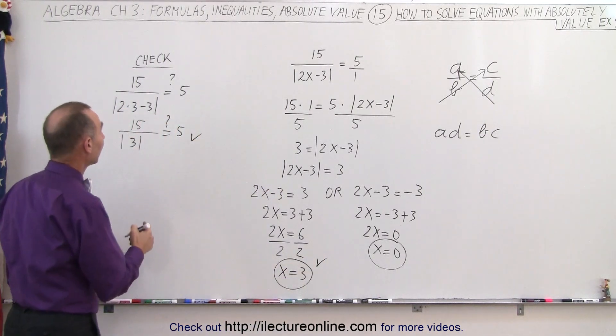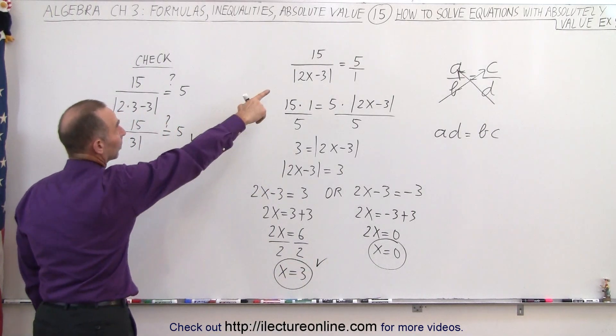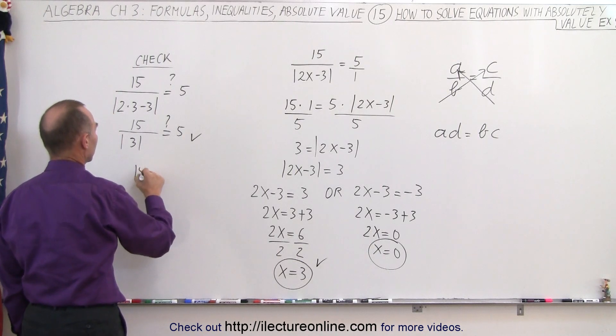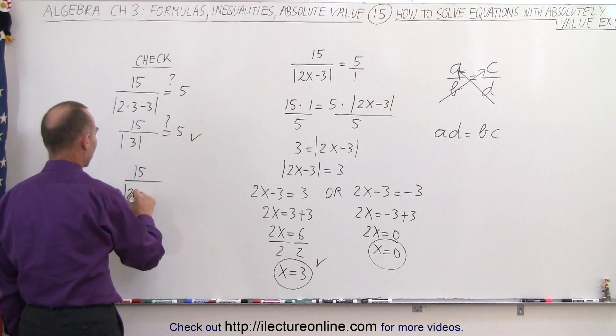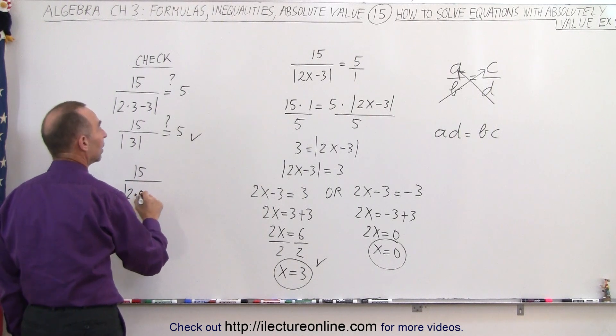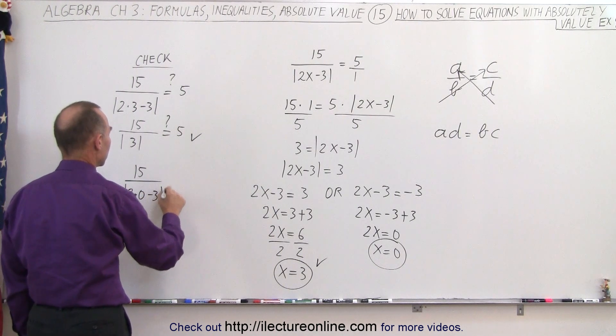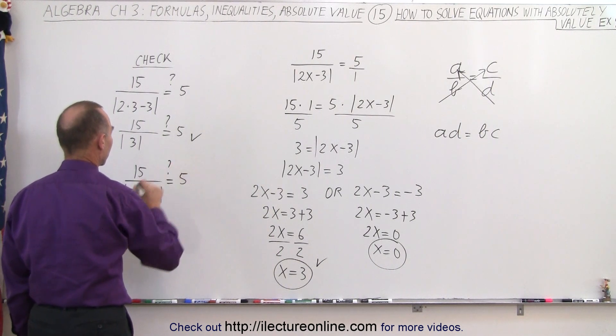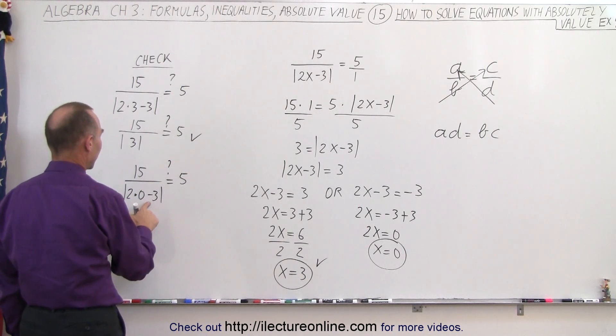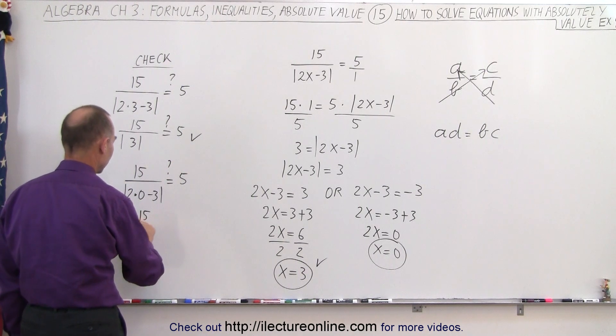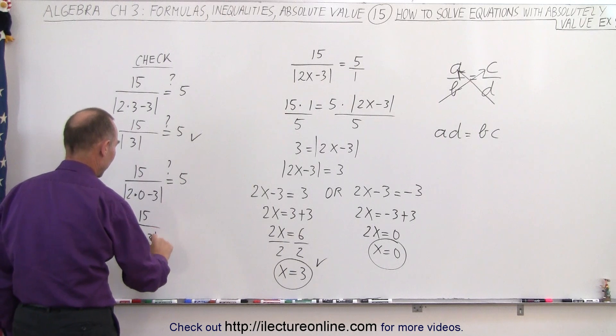For the second value, x equals 0, plug it into the original equation. We end up with 15 divided by 2 times 0 minus 3. Is that equal to 5? So 2 times 0, 0 minus 3, we end up with 15 divided by the absolute value of minus 3.